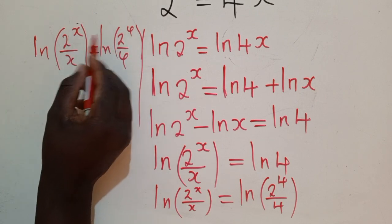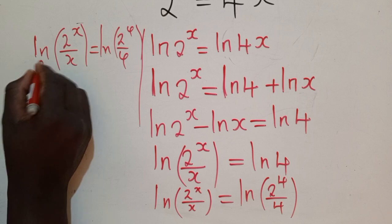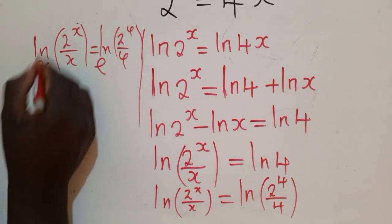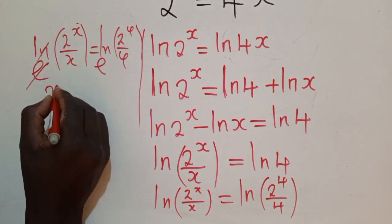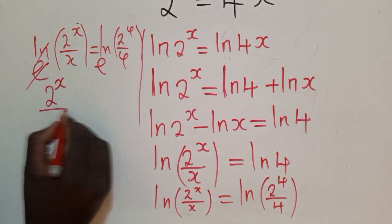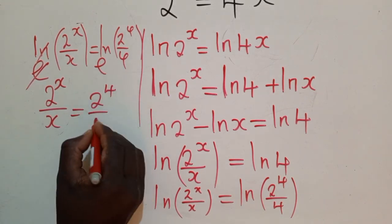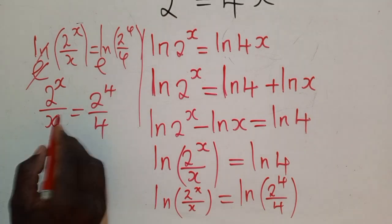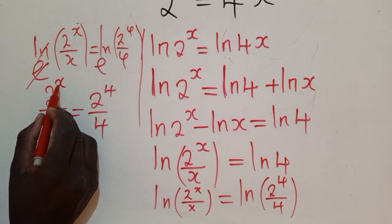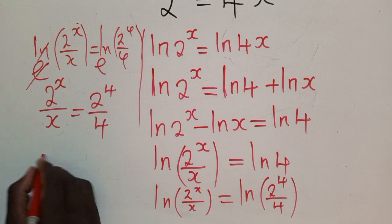But before we do that, we can even apply the e here so that this and this get cancelled. We shall remain with 2^x over x is equal to 2^4 over 4, like that, so that we see nicely what we're doing.